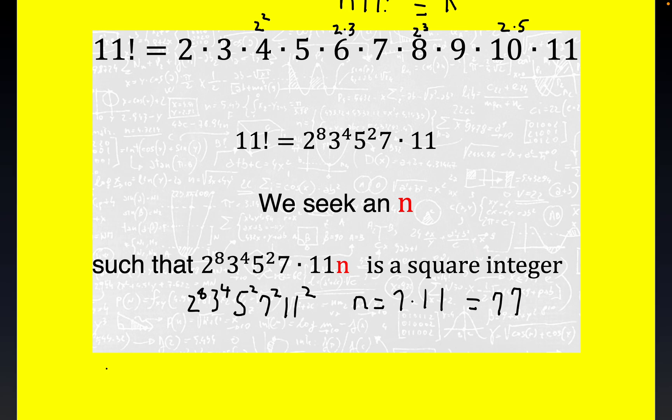So our smallest n is indeed 77. Now notice, why did I even say smallest n? We could tack on, once we have this n right here, we could tack on all the squares we wanted, all the fourth powers, all the sixth powers, all the even of any prime number, or any integer for that matter. Now you have to be careful with that because one of the integers may end up making these exponents odd, and we don't want that.